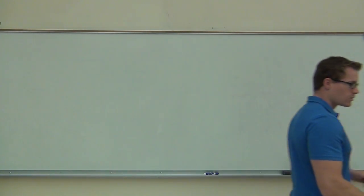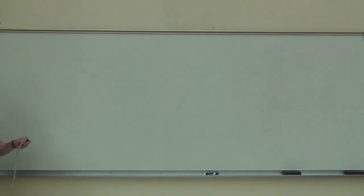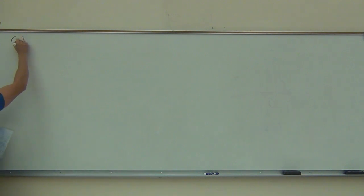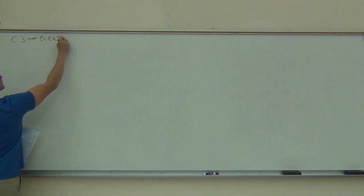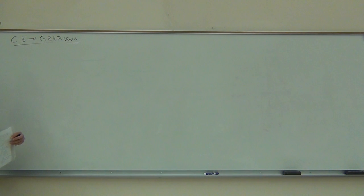We have a short review of graphing, and we'll be going on that right now. Remember, this is in your appendix, in the back part of your book. When we talk about graphing, what we really are talking about is something called the rectangular coordinate system. You've heard of this as the XY axis. See point C.3, a short review of graphing, and more specifically, we'll be reviewing the rectangular coordinate system.